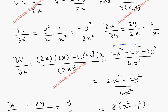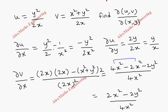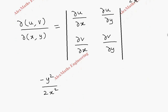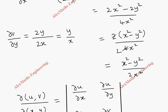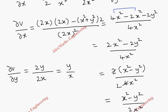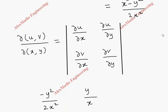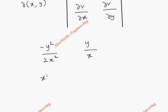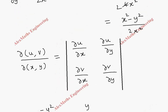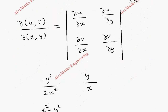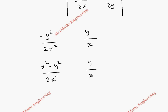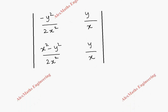Then ∂u/∂y is y/x. For ∂v/∂x, it is (x² − y²) / 2x². The last term, ∂v/∂y, is y/x. Now we are going to evaluate this determinant.